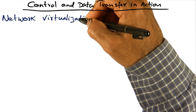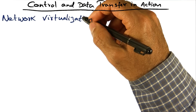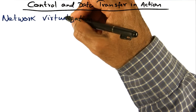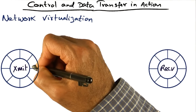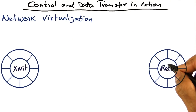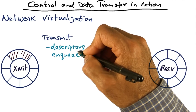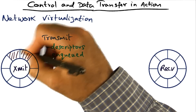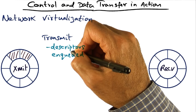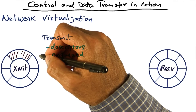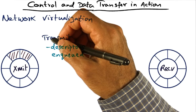The first example we'll look at is how control and data transfer is effected in Xen for network virtualization. Each guest has two I/O rings, one for transmission and one for reception. If the guest wants to transmit packets, it enqueues descriptors in the transmit I/O ring. Placing these descriptors in this I/O ring is via hypercalls that Xen provides for guest operating systems.